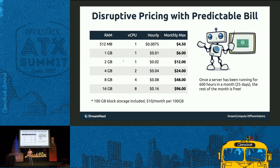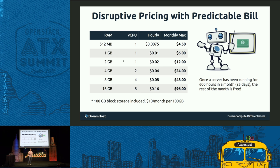With Predictable Bill, you pay for what you use — utility billing. Once you hit 600 hours in a month, which is 25 days, you no longer pay for that VM in that month. You get a predictable price up to a maximum. You also get 100 gigabytes of included SSD-accelerated block storage. For $10 a month, you can get another 100 gigabyte block. You'll never have to plug your information into a spreadsheet or calculator again to figure out what your bill will be.